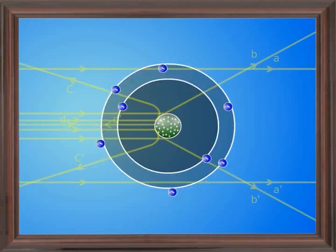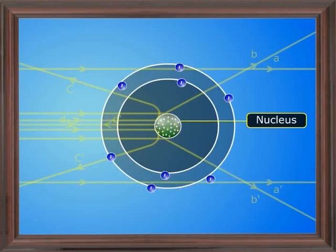Rutherford thought that the large angle deflection of the alpha particles requires strong forces to be acting on the particles. This would be possible only if all the positive charges and masses of atom are concentrated in a very small central region. He named it as nucleus.